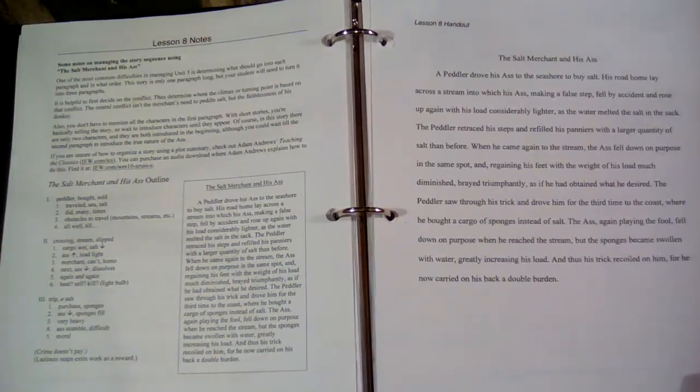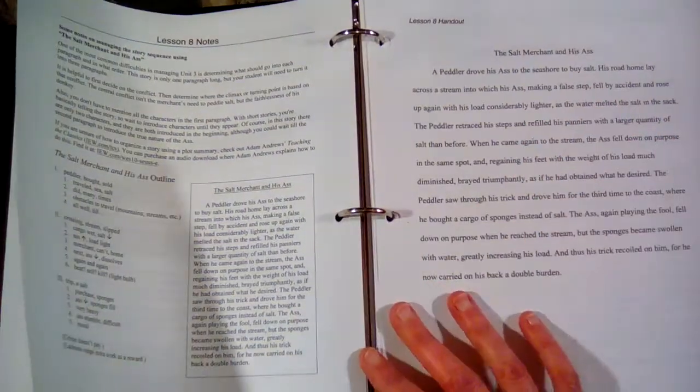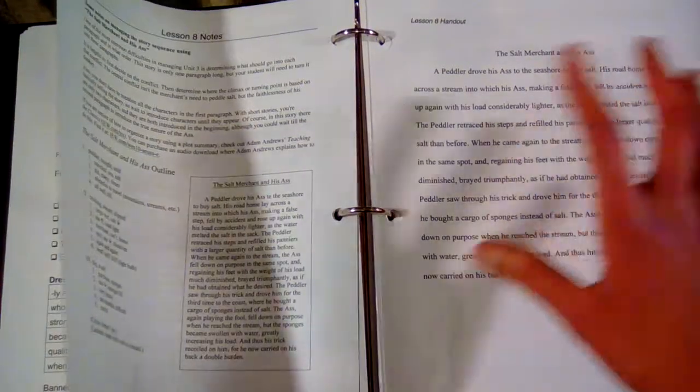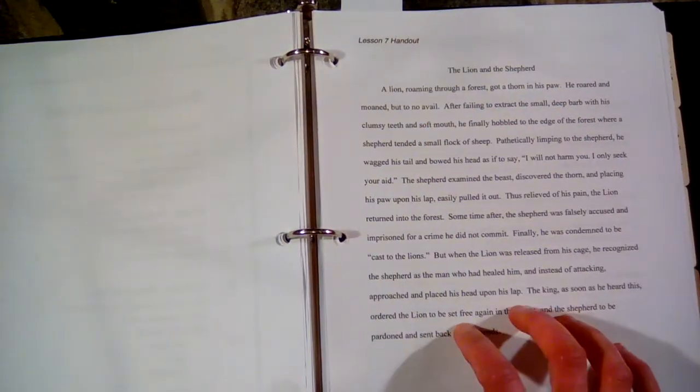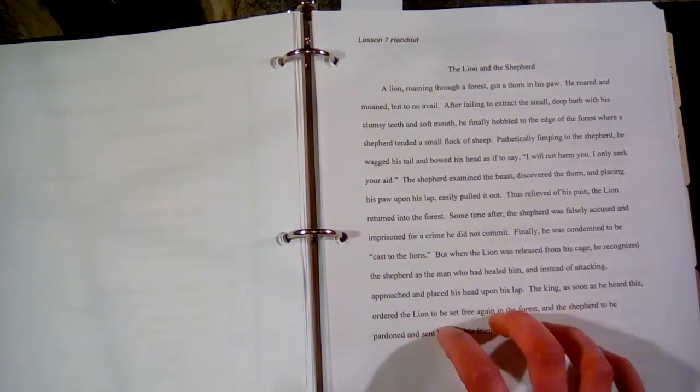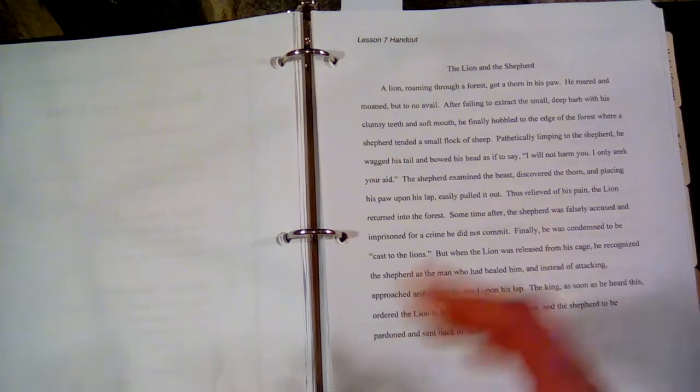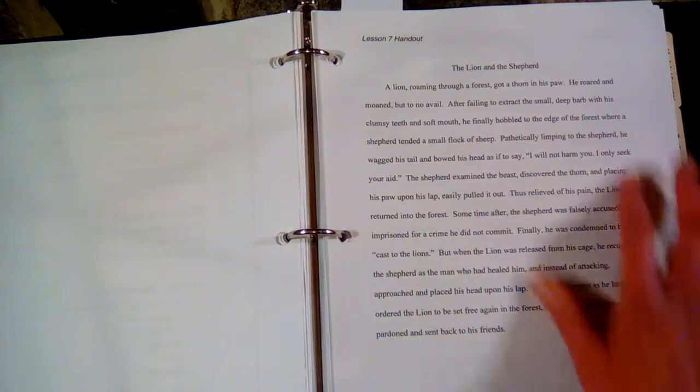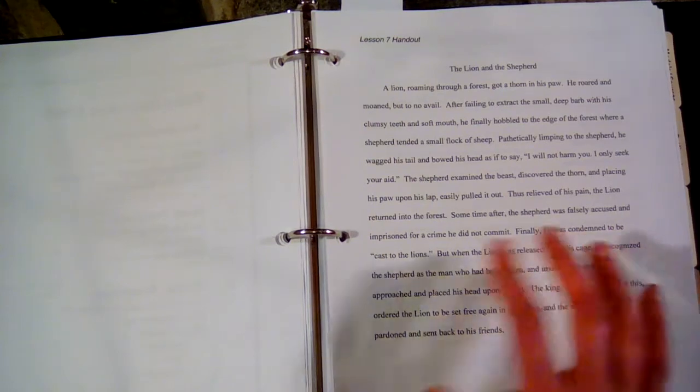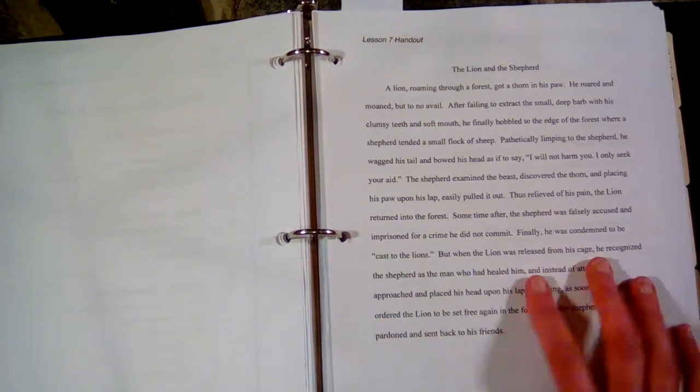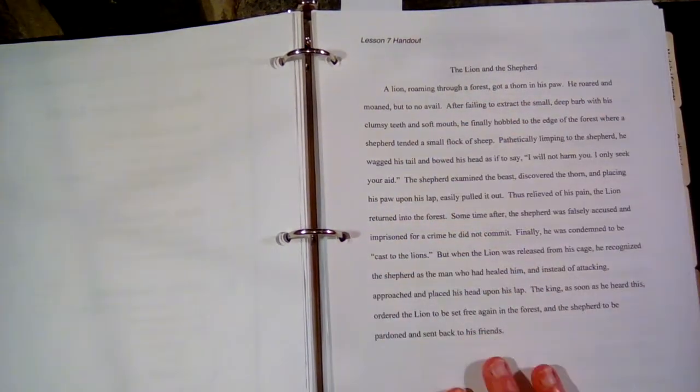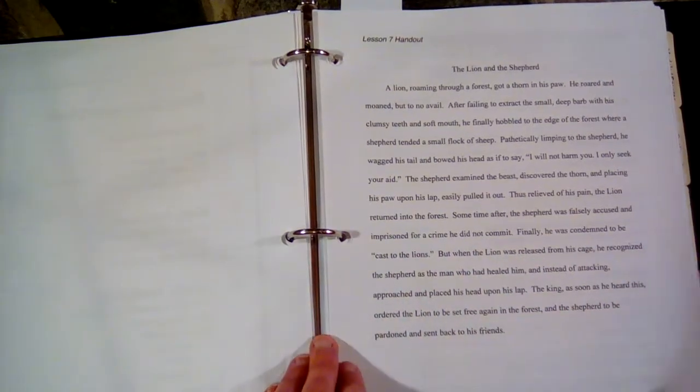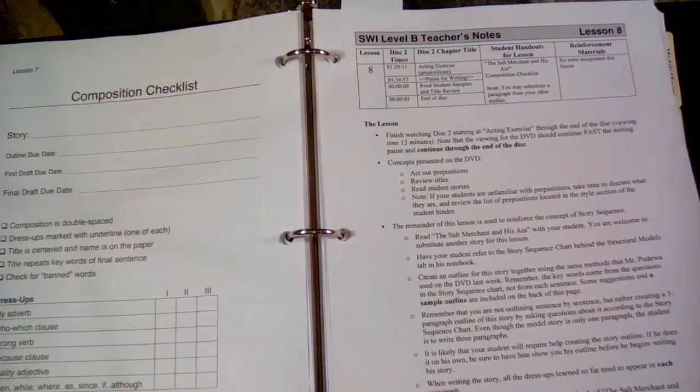My daughter was really happy when we got to this part of the book because the student is allowed to kind of alter what they've given here if they would like to. They can take this story if they want to and rewrite it, or they can do a similar story and make up their own characters and make up their own situations and write their own story. That's what my daughter has done for the most part for these lessons here. She really is creative and she did end up doing the basic lion and the shepherd story here, but she completely added characters, changed things around, and made it her own. She's been really enjoying more wiggle room with these assignments.